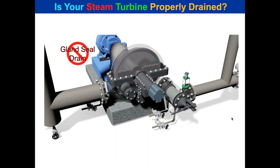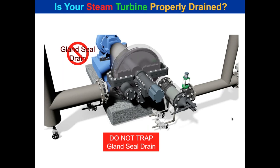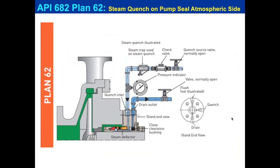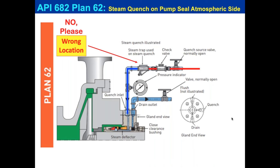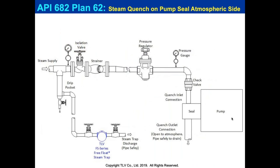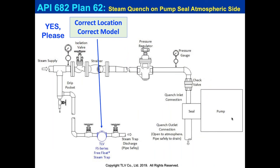Before leaving turbines — what about gland seal steam drains? Don't trap the gland seal steam drain incorrectly. Per API 682, one vendor drawing actually shows it incorrectly — condensate discharging right into the seal. What you want to do is trap it prior to the pressure regulator, so steam has an open outlet safely piped to drain. Get rid of the moisture before it goes through your pressure regulator.